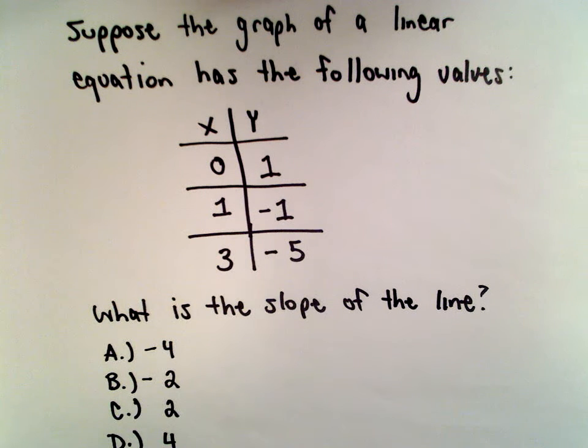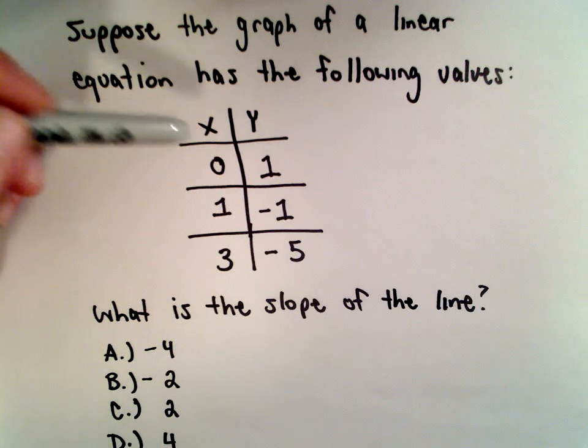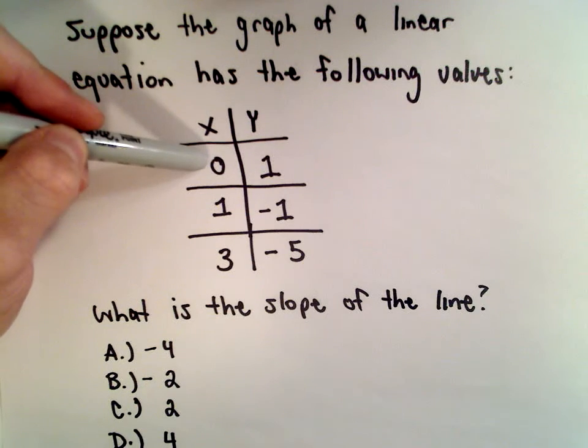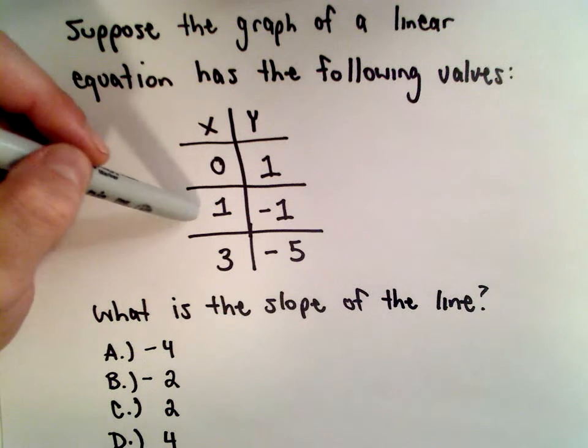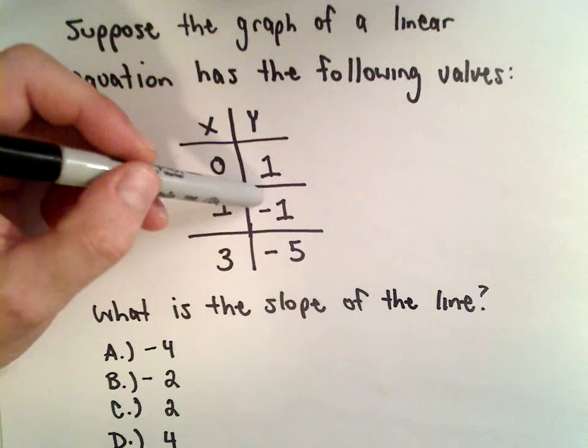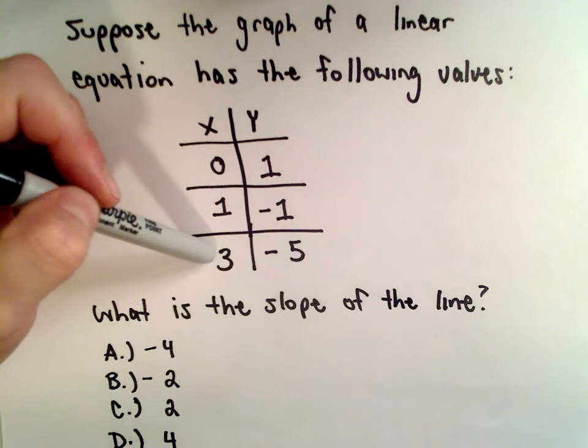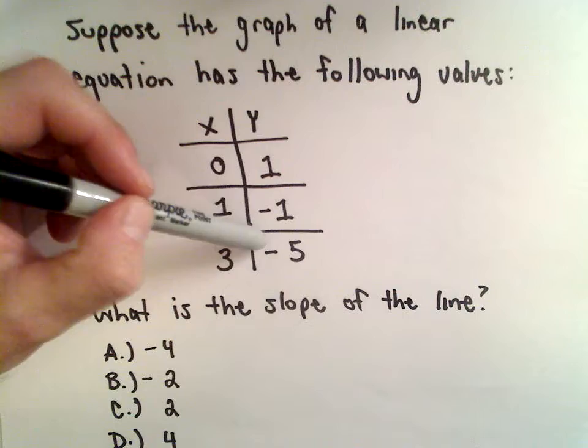Suppose that the graph of a linear equation has the following values. If we put in x equals 0, we get y equals 1. If we put in x equals 1, we get y equals negative 1. And if we substitute in x equals 3, we get y equals negative 5.